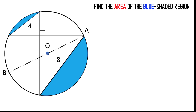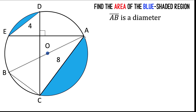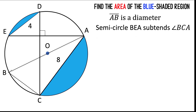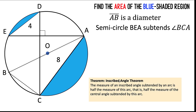Then from point B, let's connect that point to this point of intersection here to form segment BC. Let's label the other parts: this point as D and this point as point E. Now, segment AB is a diameter, which means this line segment divides the circle into two semicircles. So arc BEA is a semicircle that subtends angle BCA. Recalling our inscribed angle theorem,